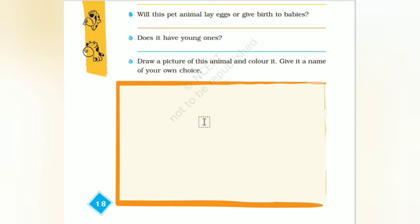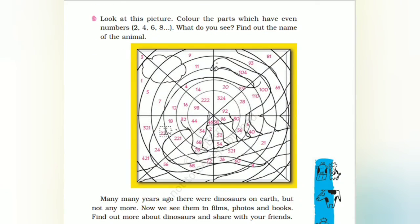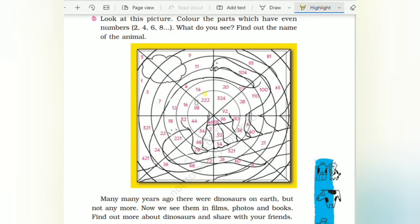Look at the picture — look at all the parts which have numbers. See this highlighted portion: if you are shading what you can see here, it shows the presence of an animal that is not seen today — it has gone extinct. Which animal is that? Most probably you all know which animal it is.